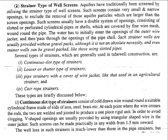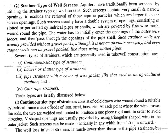The continuous slot type strainer consists of cold-drawn wire that has been wrapped around a suitable cylindrical frame. The wire is wrapped around the cylindrical bore frame to form a mesh which permits entry of water but restricts entry of fine particles and gravel. Slots can be made working over a continuous length of the bore well pipe, and strainers provided on such pipes come under the continuous slot type.